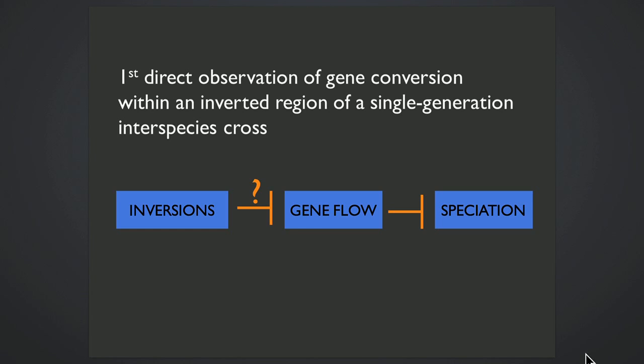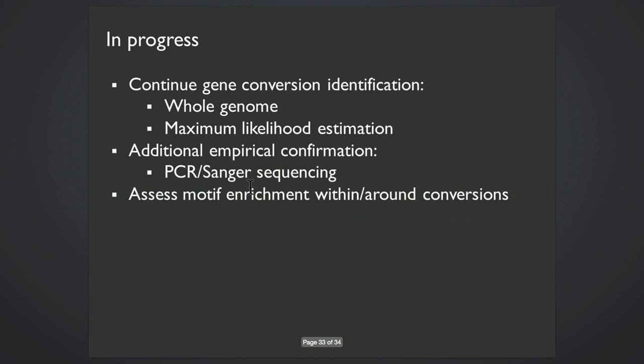So this brings me back to my original point that inversions may be a bit more complex as barriers to gene flow than we often assume. Certainly, gene conversion is occurring throughout these inverted regions.